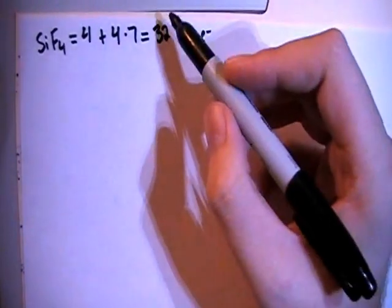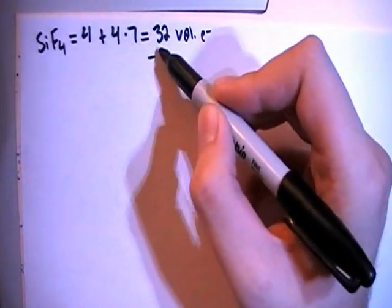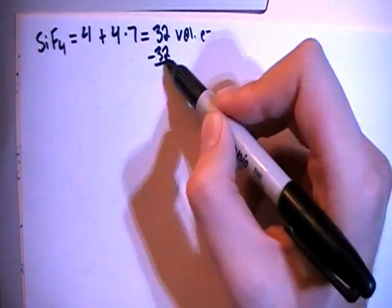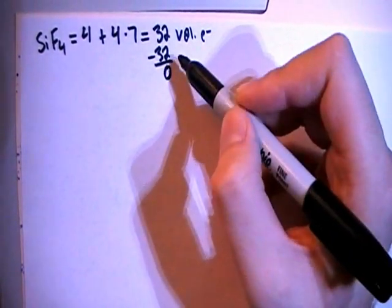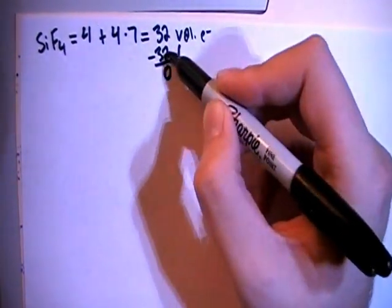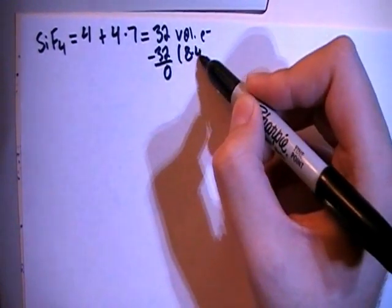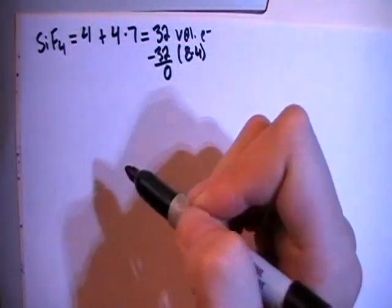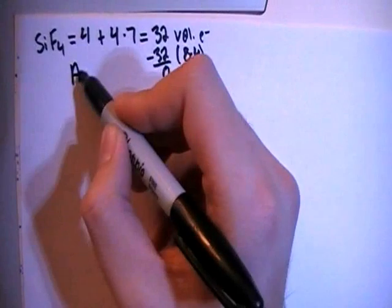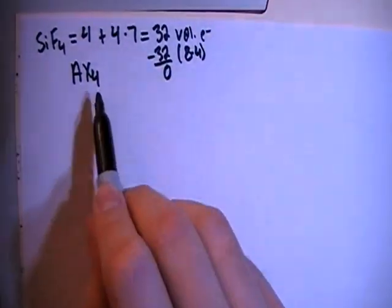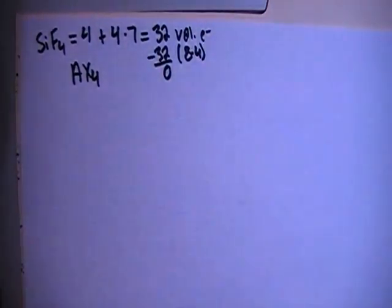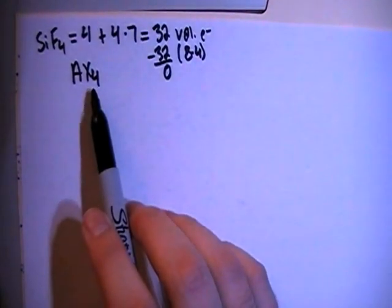We can go ahead and subtract out the largest multiple of 8 which is 32 and it gives us 0 remaining electrons. Since 32 is equal to 8 times 4 that means that this molecule will be an AX4 structure meaning that there is one central atom surrounded by 4 peripheral atoms.